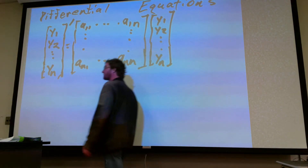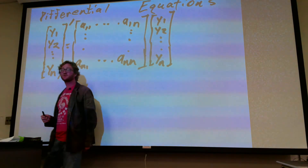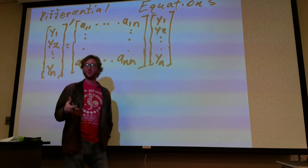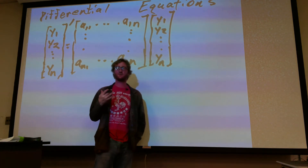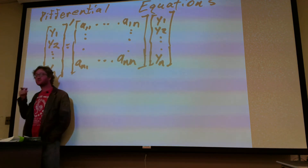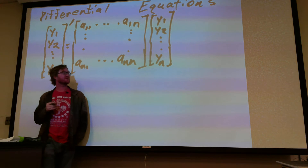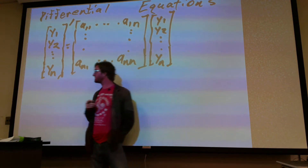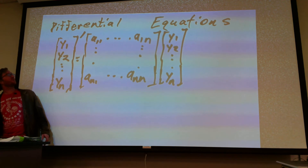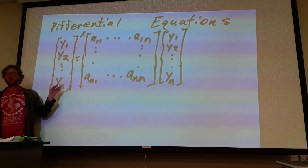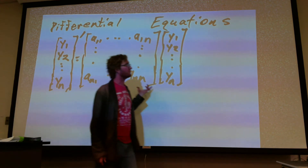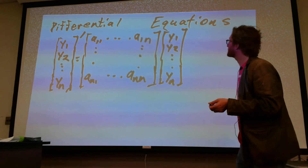This week we're going to be talking about differential equations. This is going to link off of what we were doing last week involving eigenvalues and eigenvectors. In the most general sense, you have a derivative of Y with spin components which is equal to a matrix multiplied by those components.